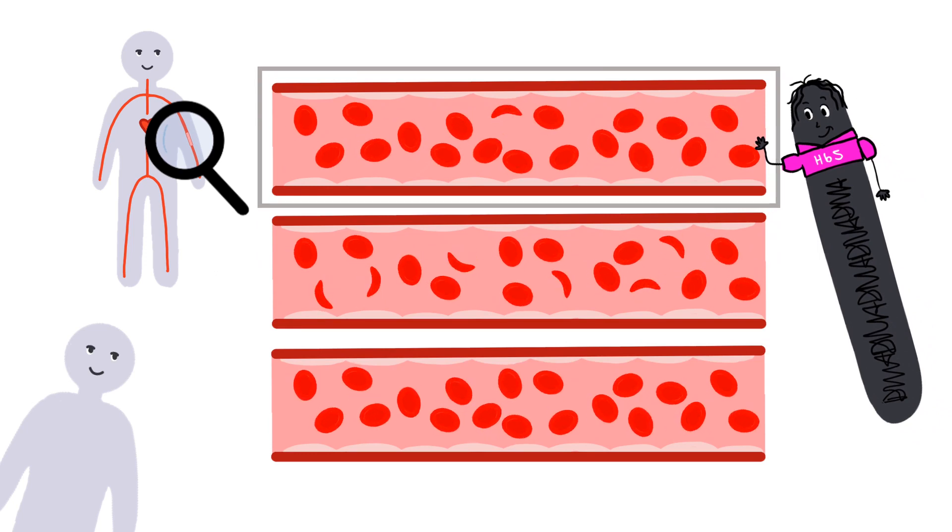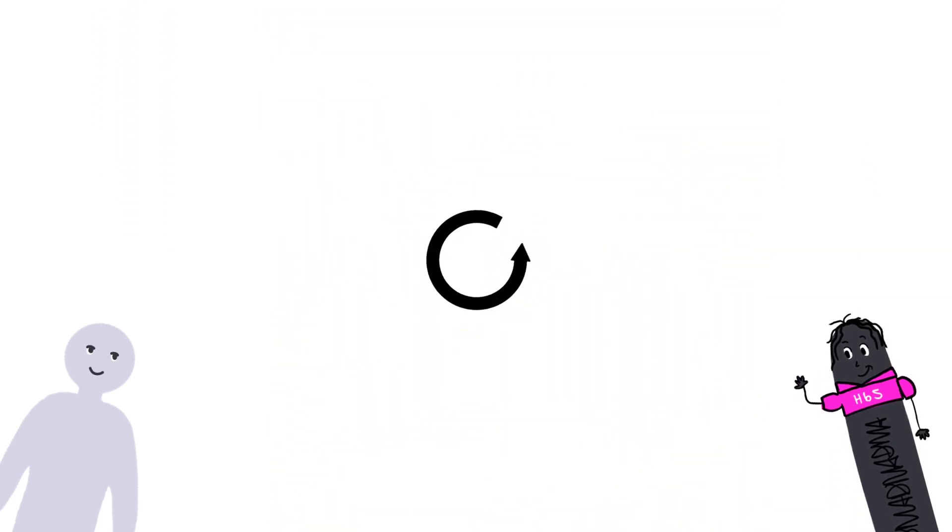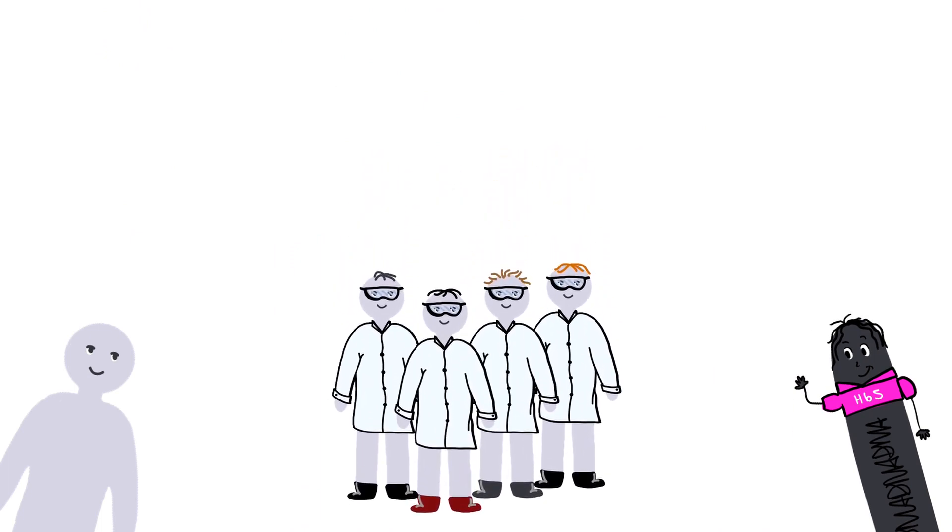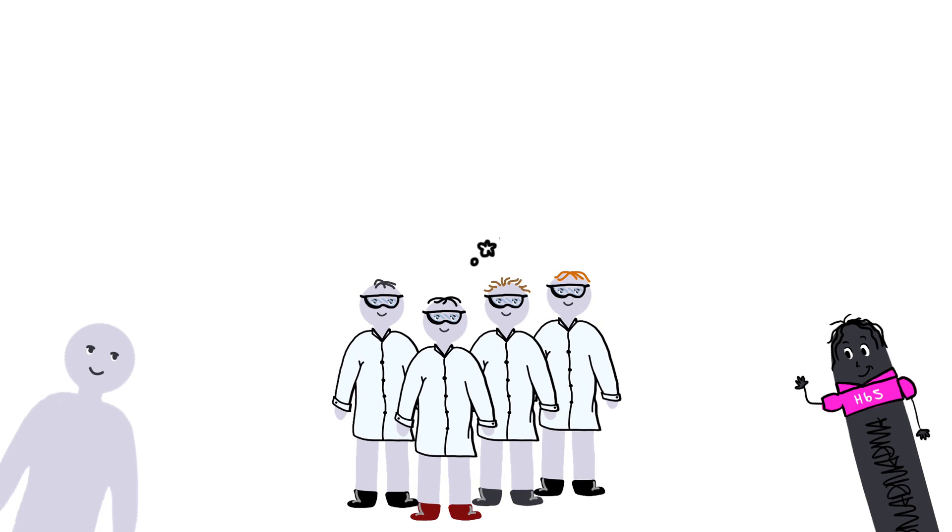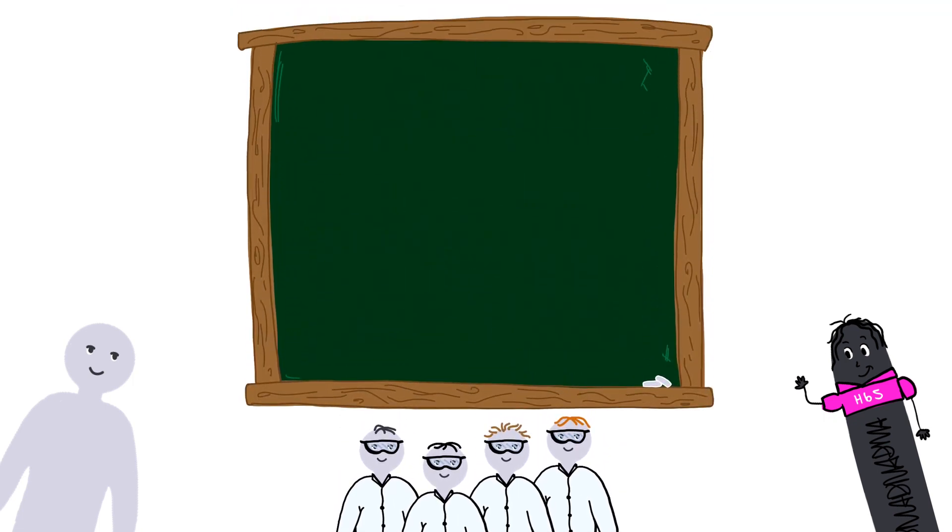To better understand the differences between sickle cell anemia and the sickle cell trait, let's rewind to 1949, where my buddies Linus Pauling, Harvey A. Itano, S.J. Singer and Iber C. Wells asked a very important question. To understand their question, let's first consider what they already knew at the time.